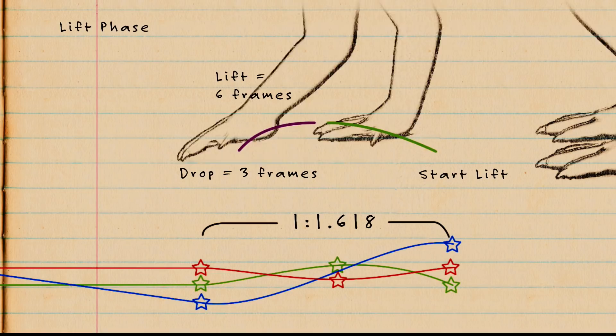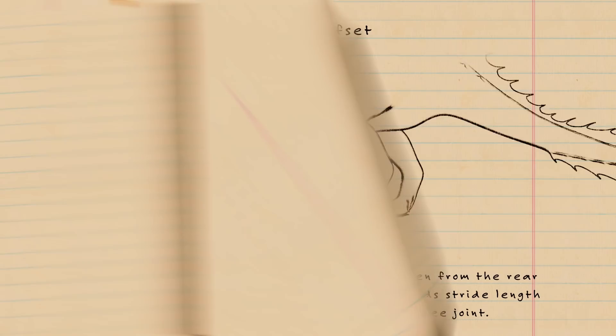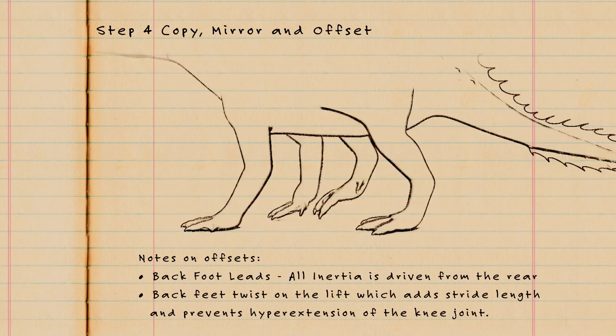Now after doing some finessing where we deal with the details of the knee jolt, the foot roll, toe splay, and other characteristics, we're ready to copy, mirror, and offset the animation to the other feet.